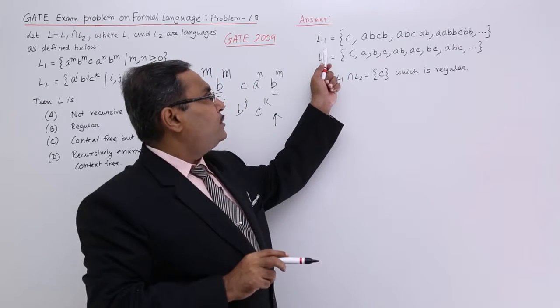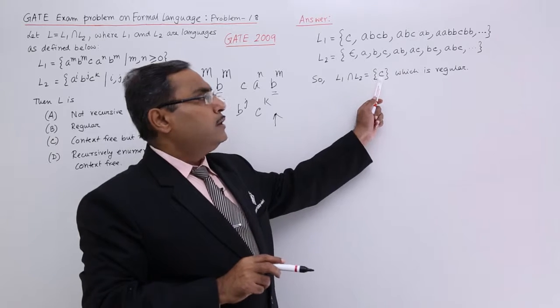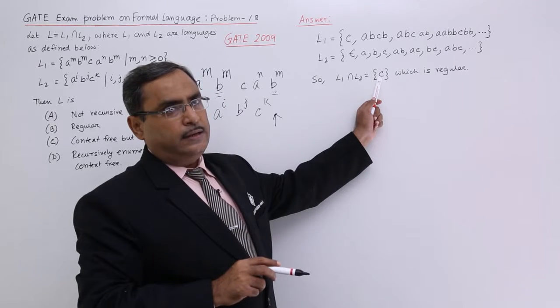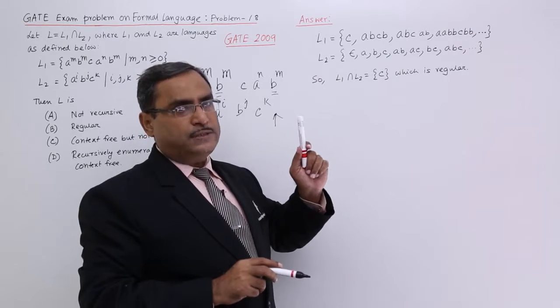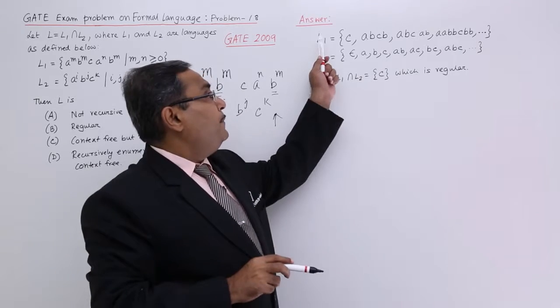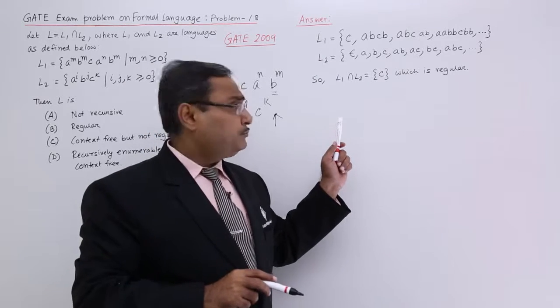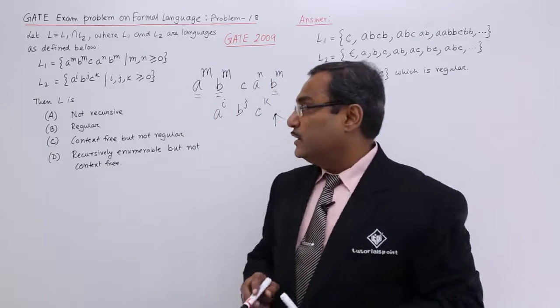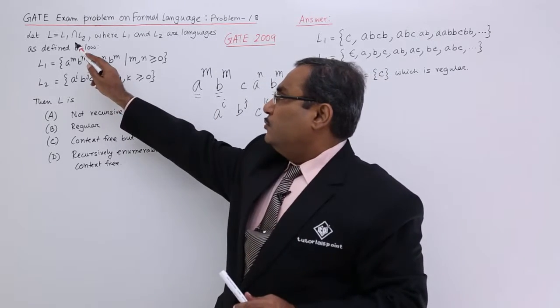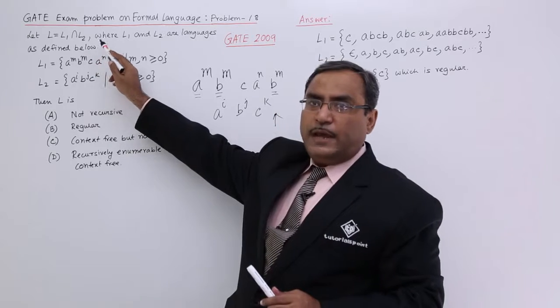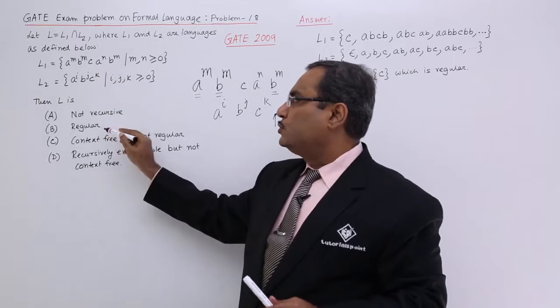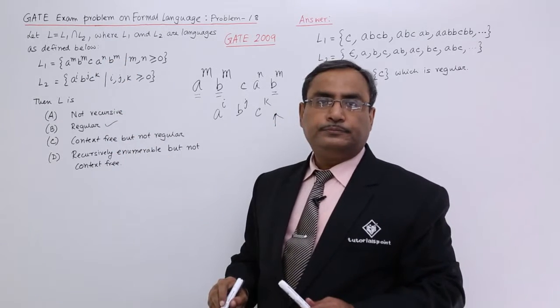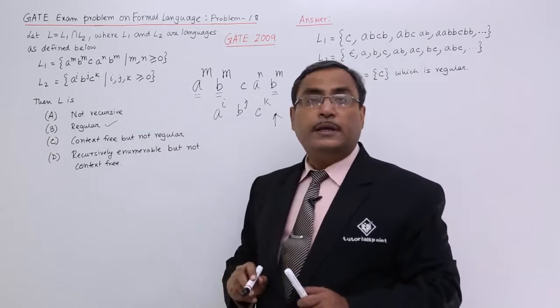So now, if you take the intersection between L1 and L2, you are remaining with C, because C is the only common expression or string between L1 and L2 sets. So C, which is regular. That is why L, which is nothing but intersection of L1 and L2, will produce a regular language. So that is the answer - answer number B.